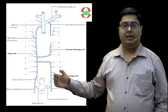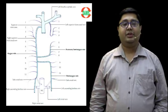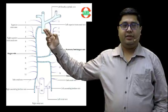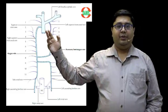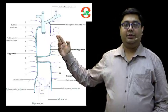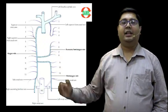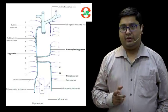If we see the drainage of the posterior intercostal vein, first posterior intercostal drains into right brachiocephalic on the right side and the left side. If we look at the second, third, and fourth posterior intercostal veins, both on the left and the right side, they join together to form superior intercostal vein.